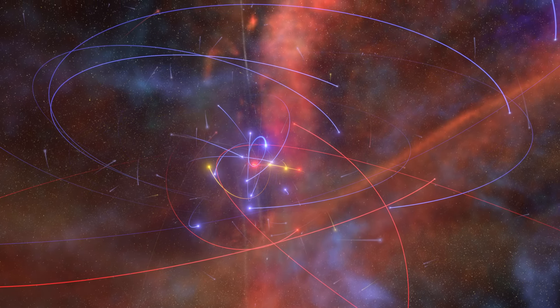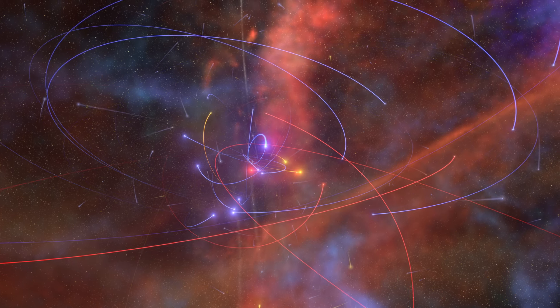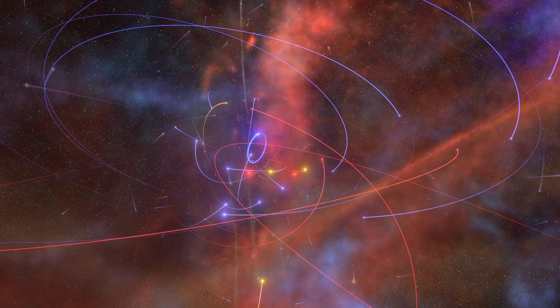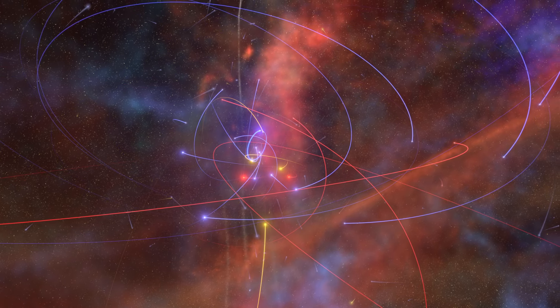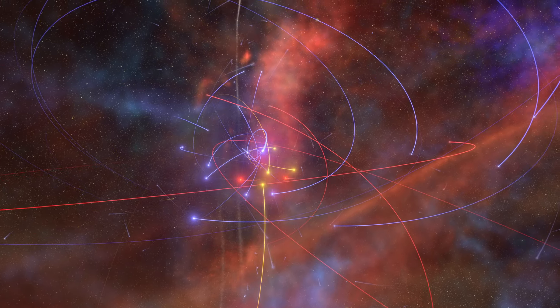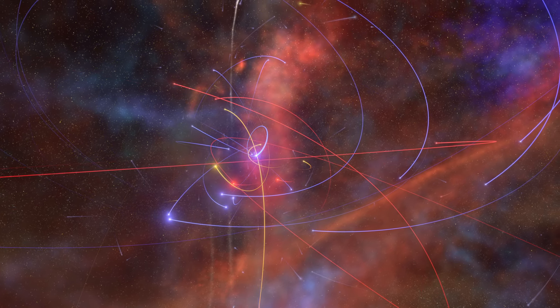This black hole, called Sagittarius A-star, is the gravitational maestro orchestrating this cosmic ballet. Its hidden mass is only unveiled by the star's intricate dance.